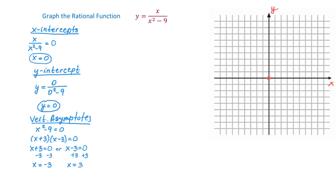Let's plot these vertical asymptotes in the rectangular coordinate system. The first one, x equals negative 3, represents a vertical line that crosses the x-axis at negative 3. We will make this line dashed because this is an invisible line that the graph will approach but will not touch it. And the second asymptote will cross the x-axis at positive 3, so we draw a dashed vertical line there.